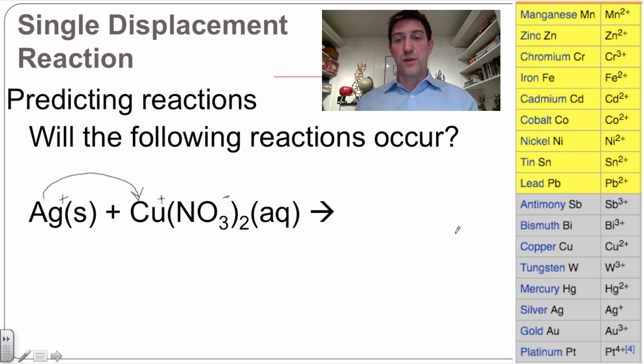The way I figure out whether or not this reaction will occur is I come down here and I find silver first. So here's silver right here, and then I find copper, and copper is right here. So copper is higher on the activity series, which means it's more active than the silver.